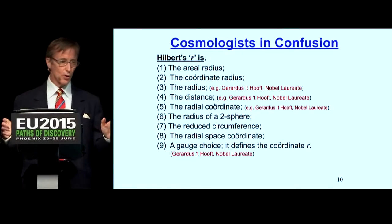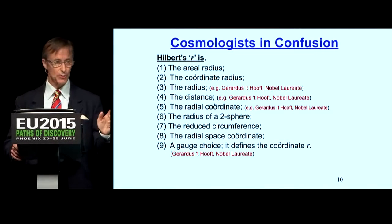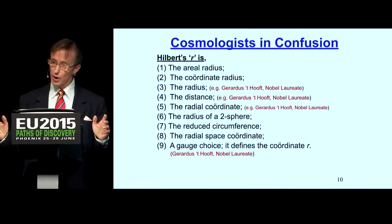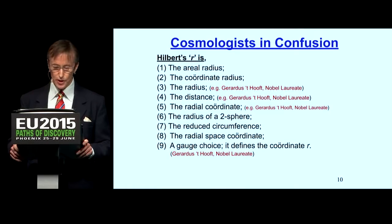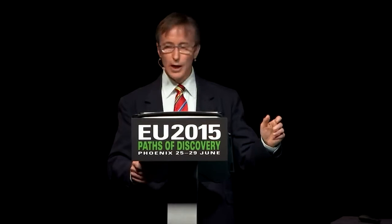Here's what I call delusional science. Cosmologists are confused about what Hilbert's r actually is. The list of claimed identities includes: aerial radius, coordinate radius, the radius, the distance, the radial coordinate, radius of a two-sphere, reduced circumference, radial space coordinate, and a gauge choice. I could call it Fred Flintstone, or dark matter — it doesn't matter, because all of them are wrong.